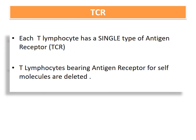Each T lymphocyte possesses a single type of antigen receptor known as the T cell receptor, or TCR. Afterwards, lymphocytes bearing antigen receptors for self-molecules are deleted by a second step of pre-processing.